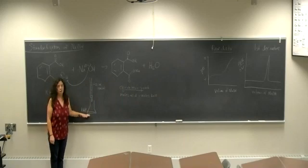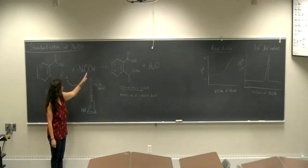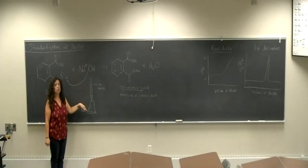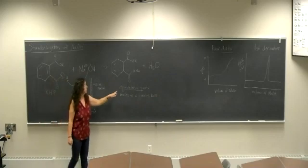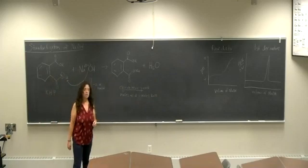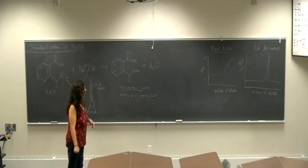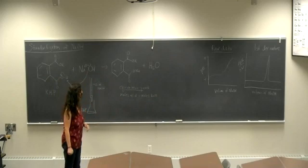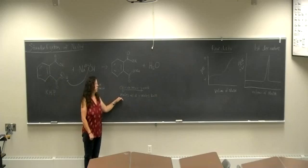So again, I have a known amount of acid in my flask and I'm going to titrate until I've reached the equivalence point. And we're going to be doing this in a couple of different ways. So if at the equivalence point, the moles of my acid equals the moles of my base,